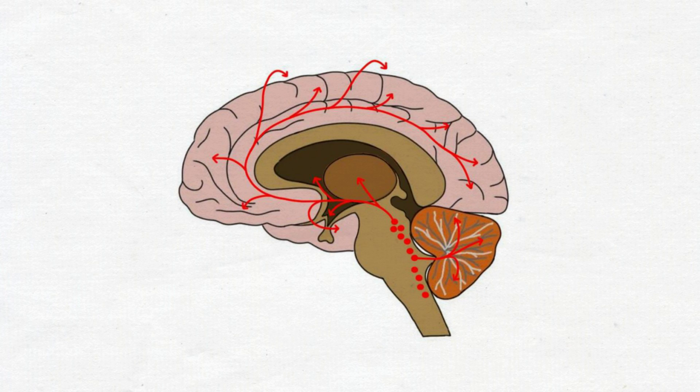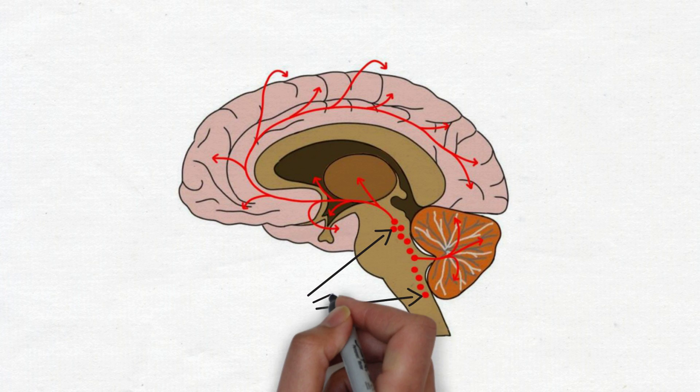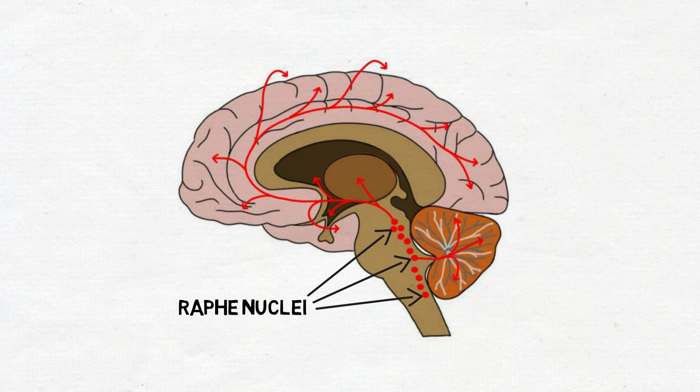Serotonin neurons are primarily found in the brainstem, in clusters of neurons called the raphe nuclei. Serotonin neurons from the raphe nuclei project throughout the brainstem and brain, and provide serotonin to the rest of the central nervous system.